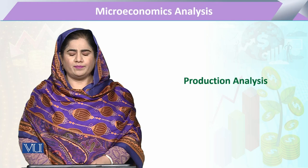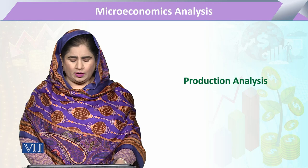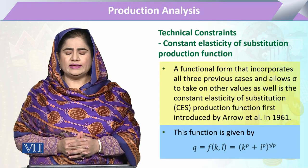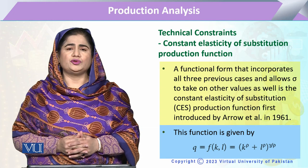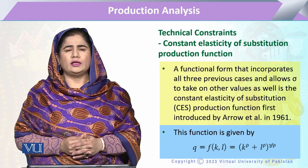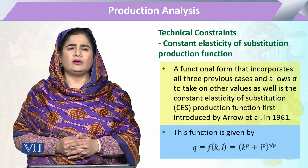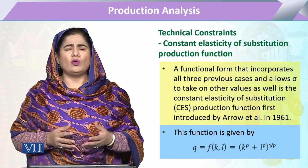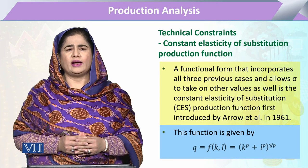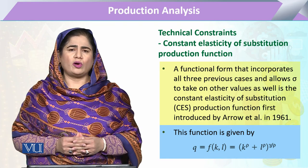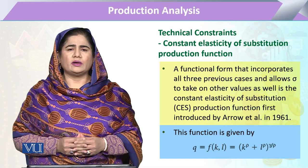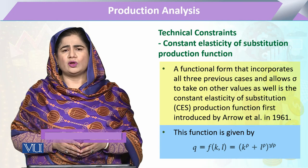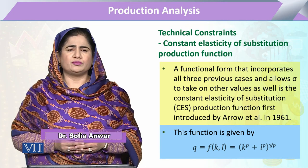Module 135 in production analysis: we are going to explain the Constant Elasticity of Substitution (CES) production function. This production function was given by Arrow in 1961 and it mostly exhibits the same functions explained through the Cobb-Douglas production function, but it has certain more capacity to explain other forms of elasticity of substitution as well.